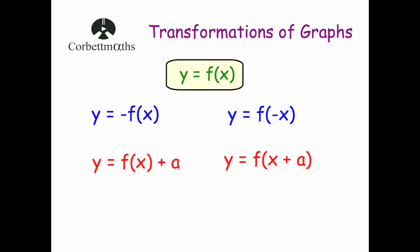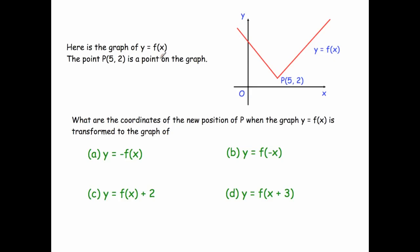Now let's look at two exam questions. The first one: here is the graph y equals f of x, and the point (5, 2) is on the graph. Where does that point move to for each transformation? The first has a minus sign in front of f of x — a vertical reflection in the x-axis. The point moves from (5, 2) down to (5, -2), because it was two squares above the x-axis and reflects two squares below.